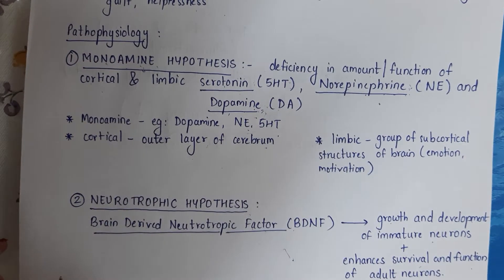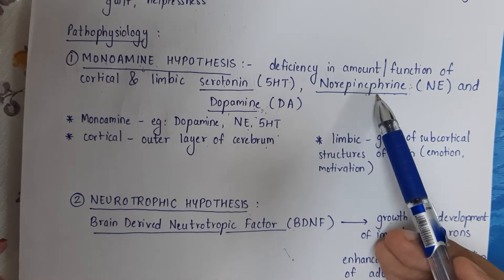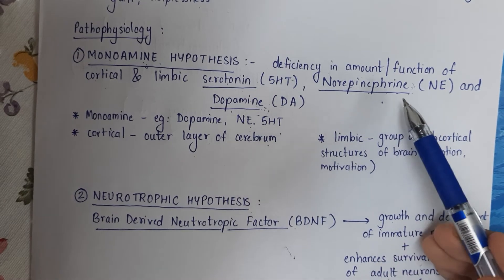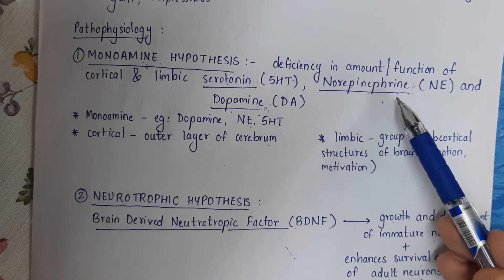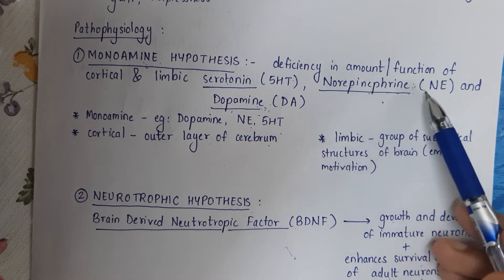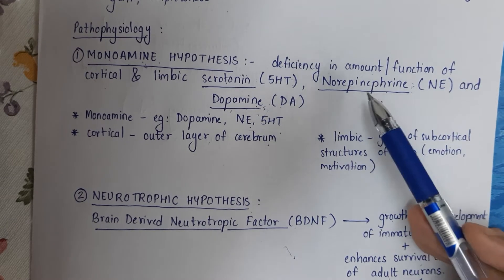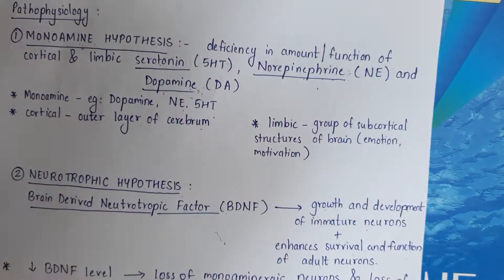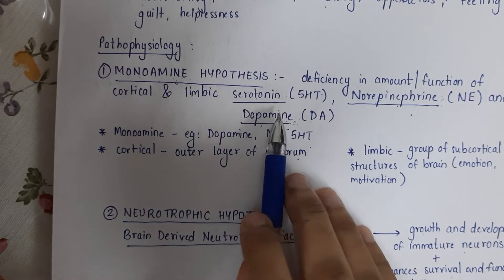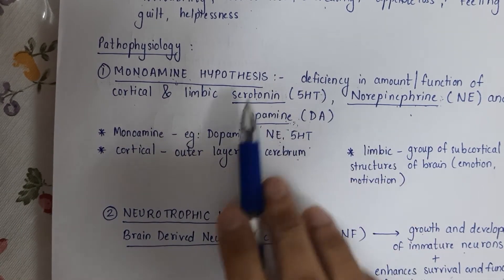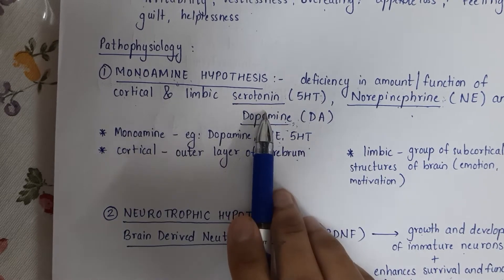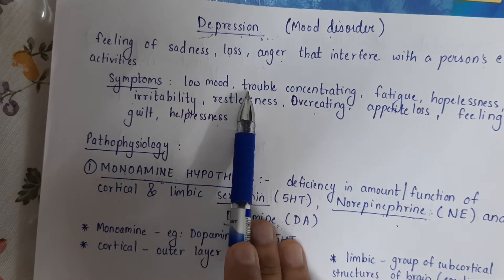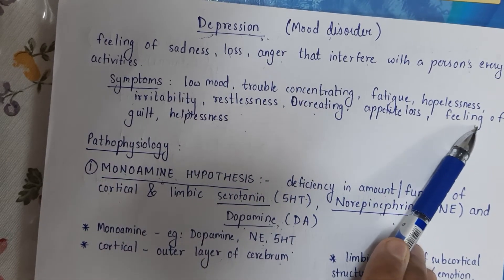Norepinephrine is the next neurotransmitter. This neurotransmitter is released when we face extreme pleasure — when we are very happy. All three neurotransmitters have something in common: when the person is happy, levels of all three are elevated. In depression, the exact opposite is happening, so obviously all three will decrease.